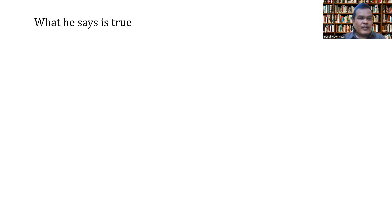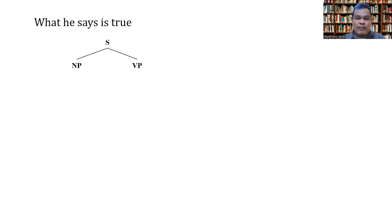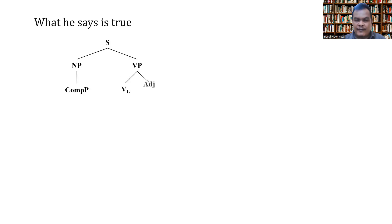The sentence 'what he says is true' is composed of NP and VP — noun phrase and verb phrase. What makes this sentence different from other sentences is the element of the NP. The NP is composed of a complement phrase, and the VP is composed of a linking verb and adjective.